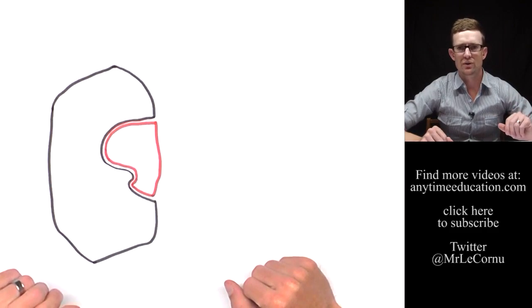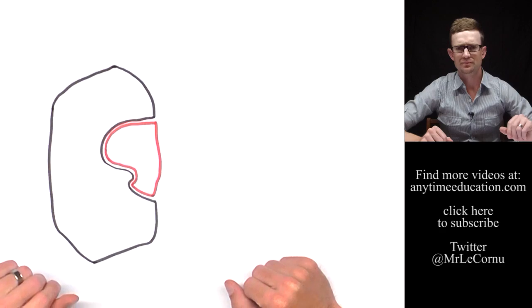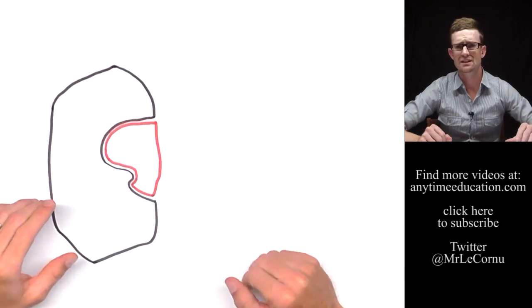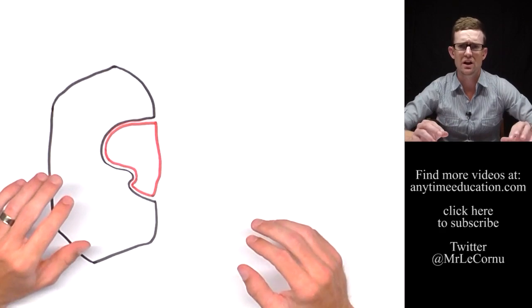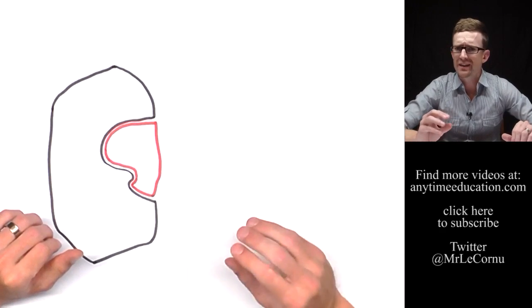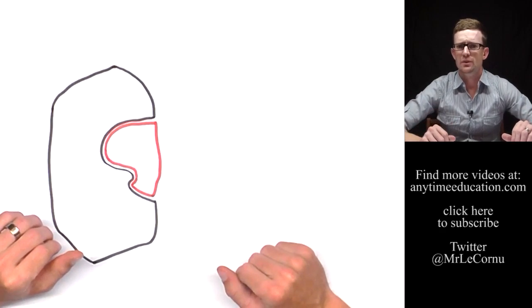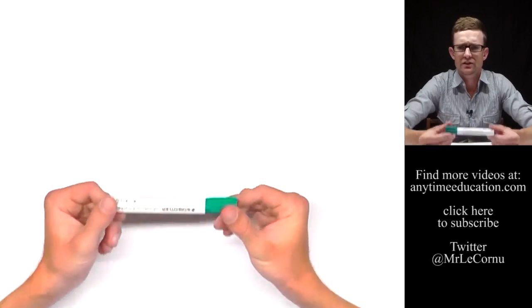So that's the induced fit. It's simply the enzyme changing its shape slightly so that it forms an even more exact fit with the substrate. And so I just thought I'd demonstrate it with this texture.